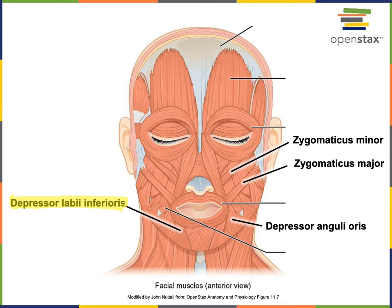A muscle with the opposite action is zygomaticus minor, which elevates the upper lip. Zygomaticus major is just a little bit larger than zygomaticus minor and is located lateral to it. Zygomaticus major inserts onto the corner of the mouth — the angle of the mouth — in order to perform the action of elevating the angle of the mouth. This is what we commonly refer to as smiling, so zygomaticus major is your smiling muscle.